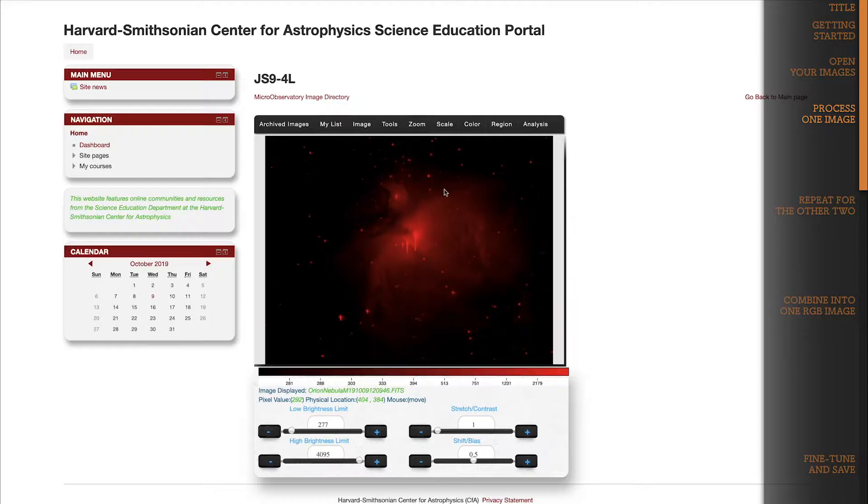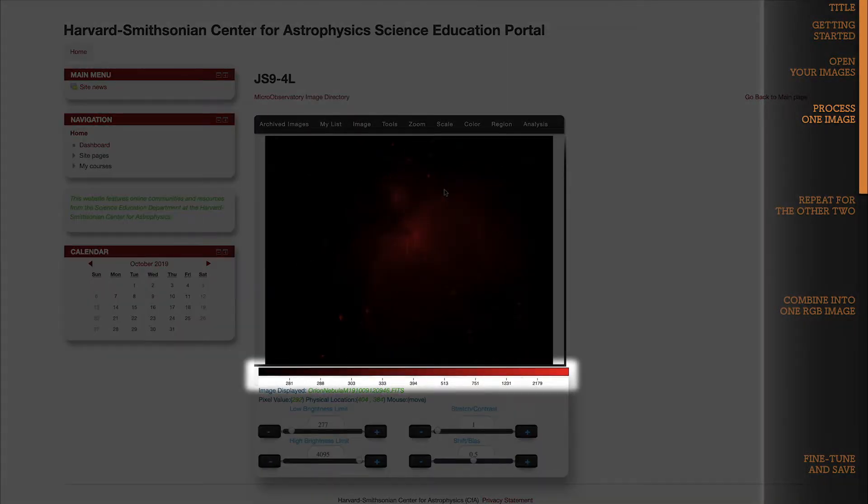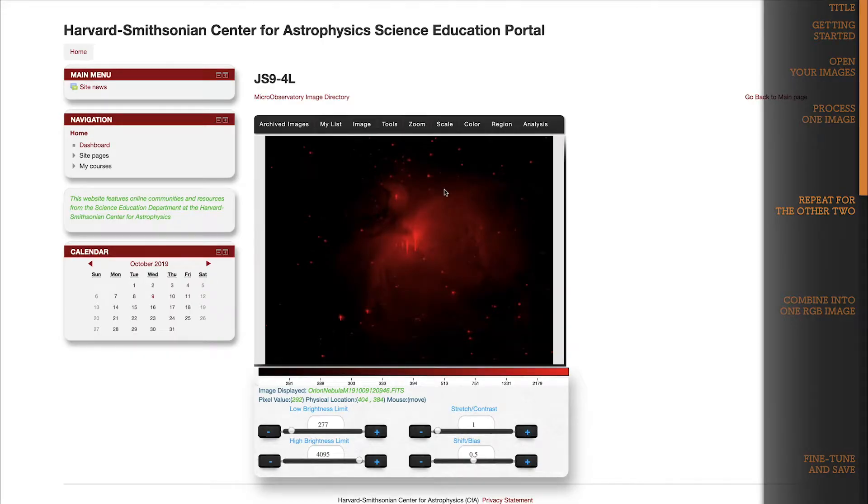There! Now our red filtered image has been recolored according to a black to red color scale. We're done processing our red image, so we can set it aside for now and move on to the next open image in our list.